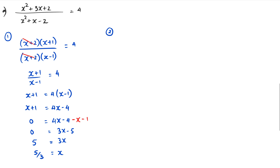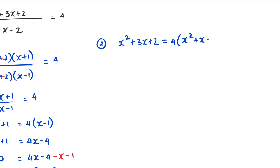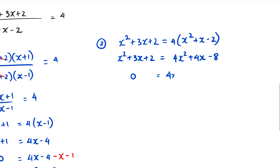In method two, I rearrange to get x² + 3x + 2 = 4(x² + x − 2), eliminating the denominator. Expanding the right side gives 4x² + 4x − 8. Bringing all terms to one side: 4x² + 4x − 8 − x² − 3x − 2, which simplifies to 3x² + x − 10.